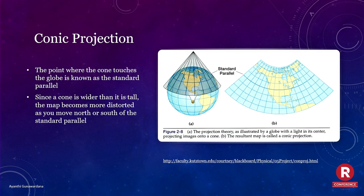Since the Earth is round — sorry, flat earthers — this is measured in angular units, usually degrees. A projected coordinate system is a geographic coordinate reference system that has been flattened. When using a projected coordinate system, you can measure distances using a straight line. I'll show you some of the different ways the globe can be sliced. The conic projection is where you take the area where the cone touches the Earth and flatten it out. Since a cone is wider than it is tall, the map becomes more distorted as you move north or south of the standard parallel.